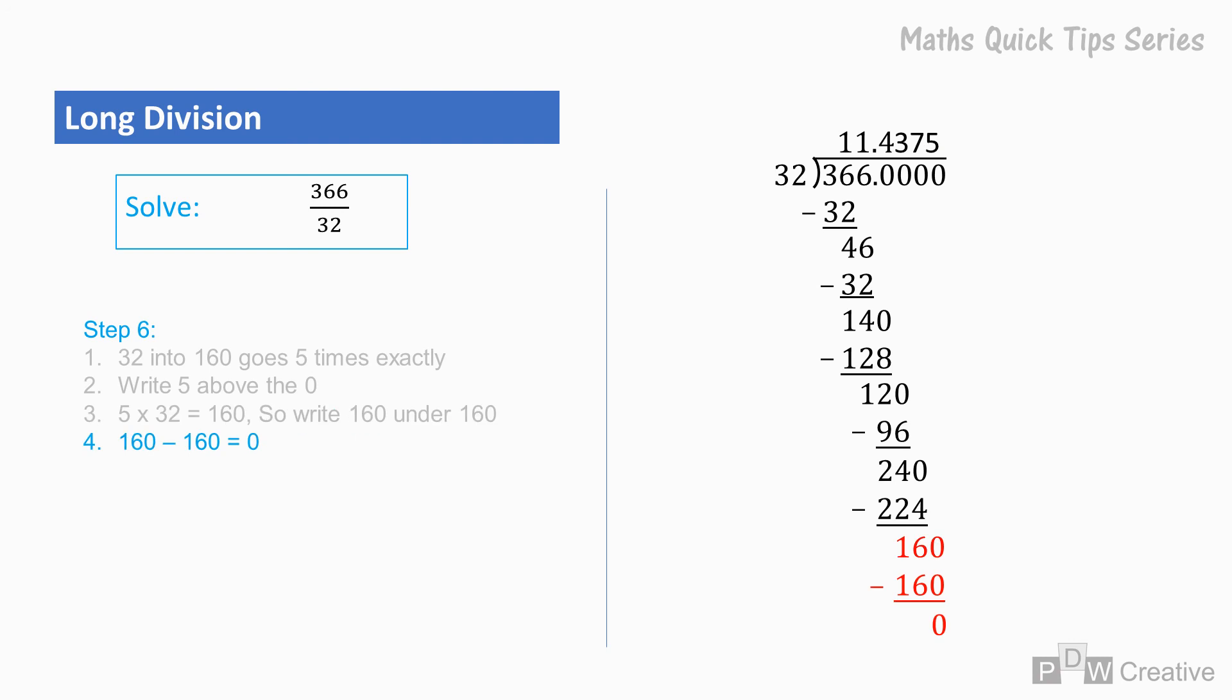160 minus 160 equals 0. At this point, we could keep carrying over 0s without finding a figure that 32 will go into. So the answer is complete.